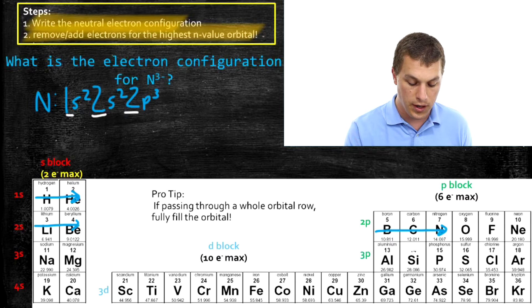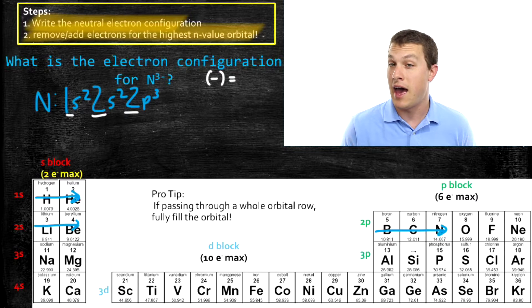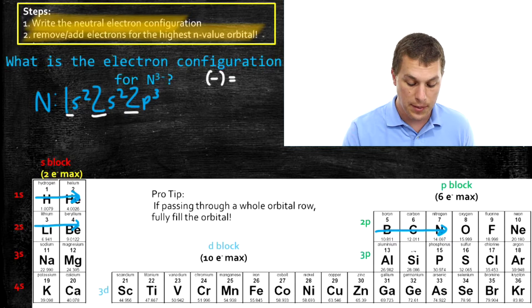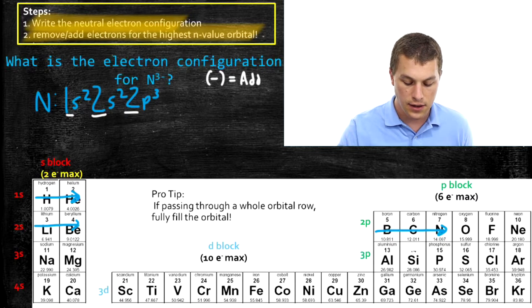And here's the thing you need to remember. If I have a negative ion, well that means that I have excess electrons. So any time I have a negative ion, I need to add electrons.